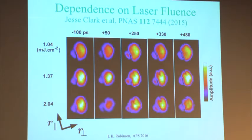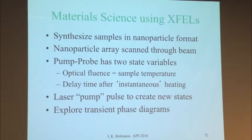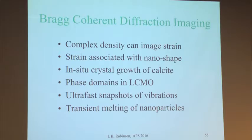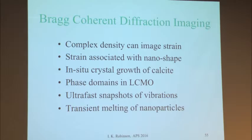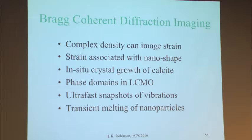To summarize: we can get complex density patterns to image strains inside crystals; strain is coupled to crystal shape through the Gibbs-Thompson effect; we can observe crystal growth and the role of dislocations in calcite growth; we're pursuing phase domain imaging in correlated electron materials at low temperature; and we've demonstrated snapshot imaging of vibrations inside crystals with an X-ray free electron laser, including transient melting behavior.